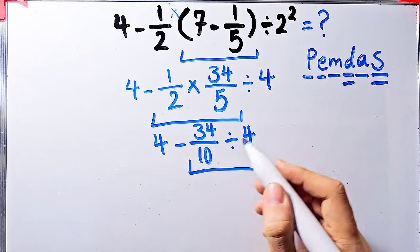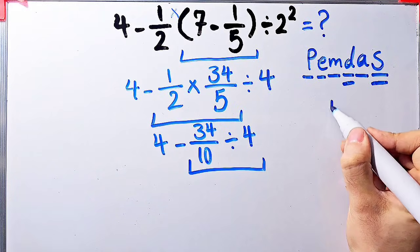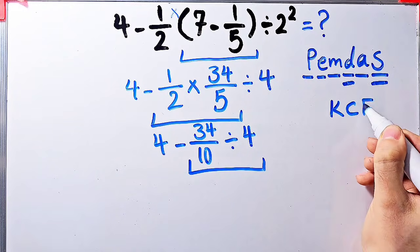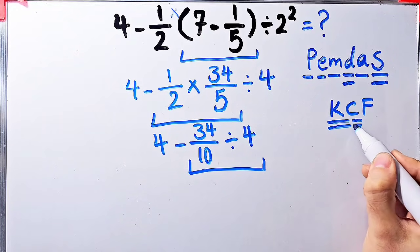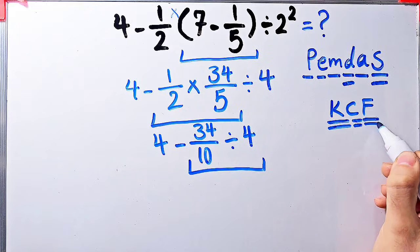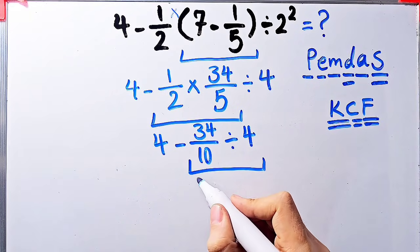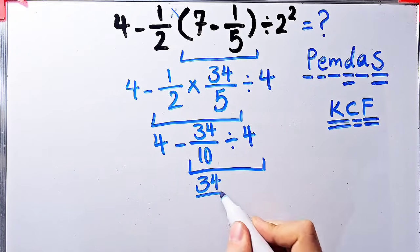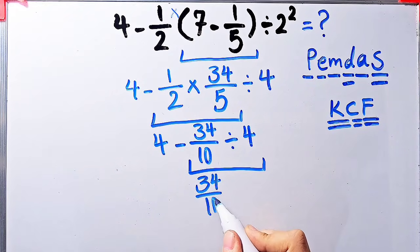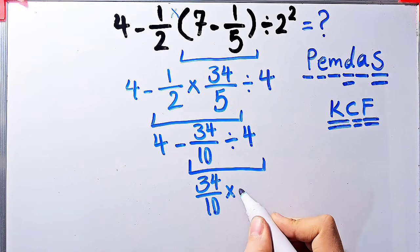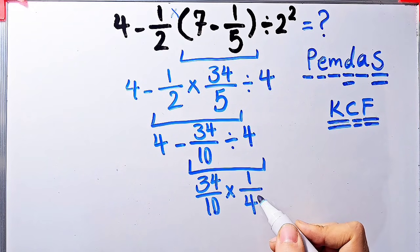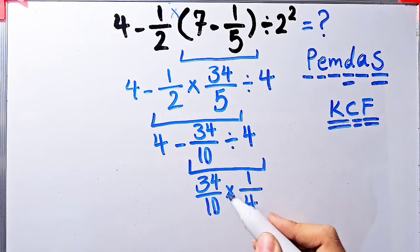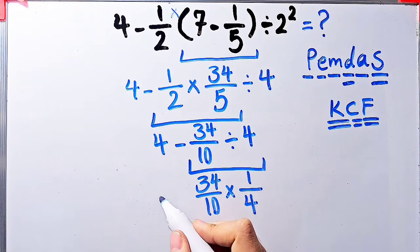To solve this part, we need to follow the KCF rule. K stands for keep, C stands for change, and F stands for flip. We keep the first fraction as it is, after that we change the division sign to the multiplication sign, and after that we flip the second number. Now we have 4 minus 34 over 10, then times 1 over 4.